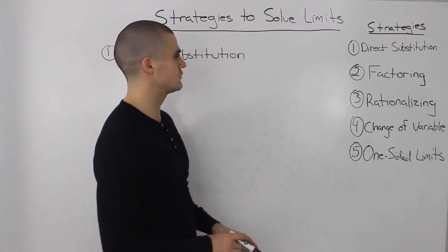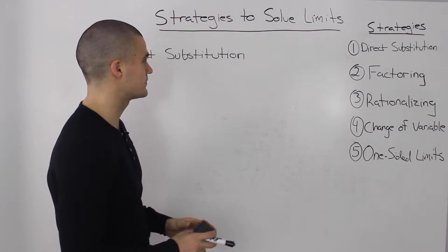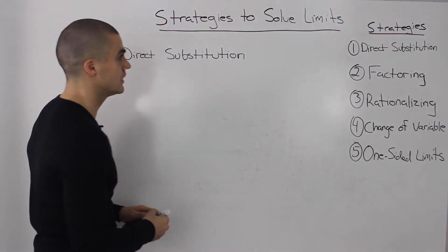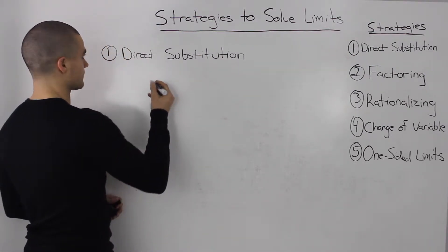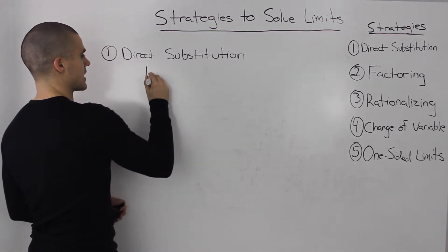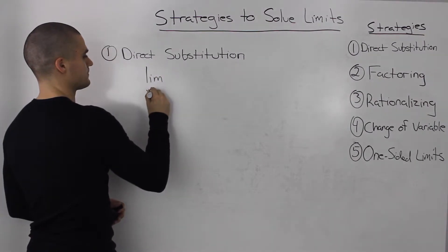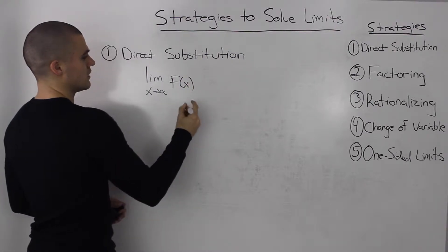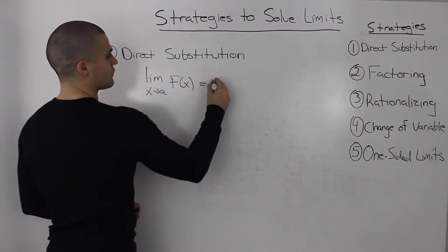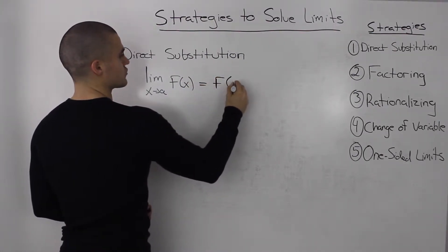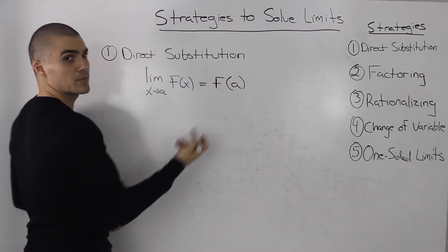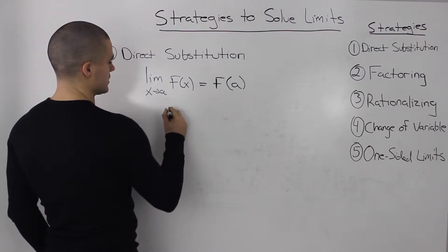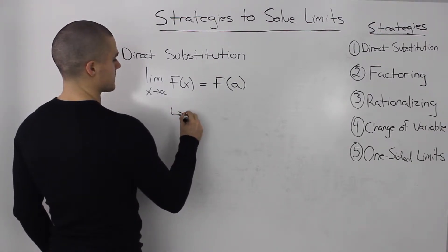Some of these can get a little confusing, so make sure you follow along. We're going to start with the easiest one: direct substitution. What this means is that if we have a limit as x approaches a of some function, and we can just directly substitute a into the function, that's what the limit equals. Now, a couple of things to note about this strategy.